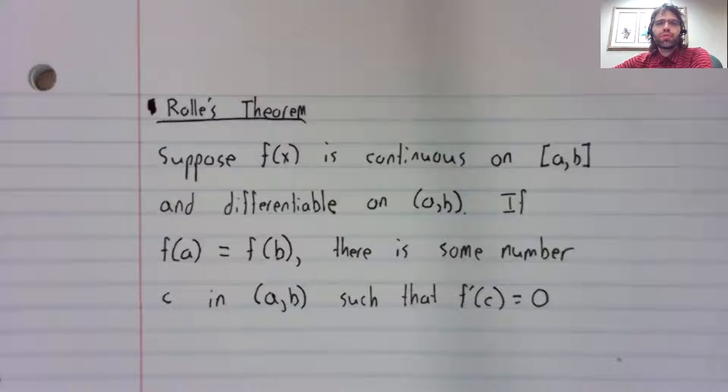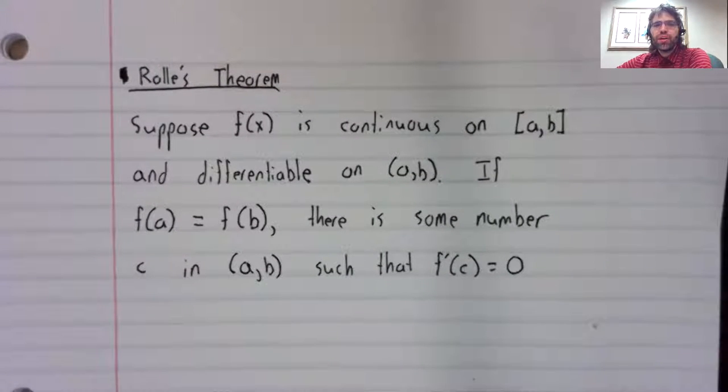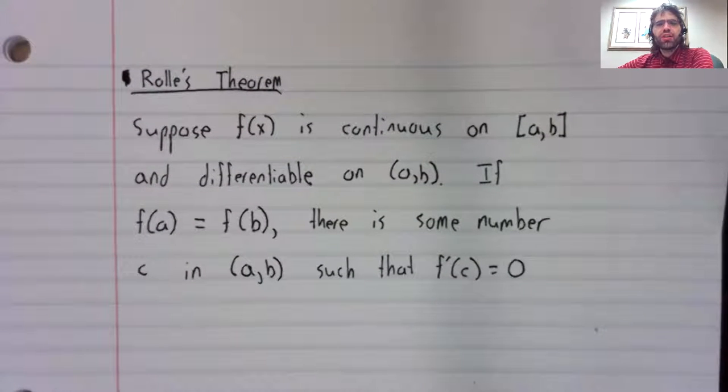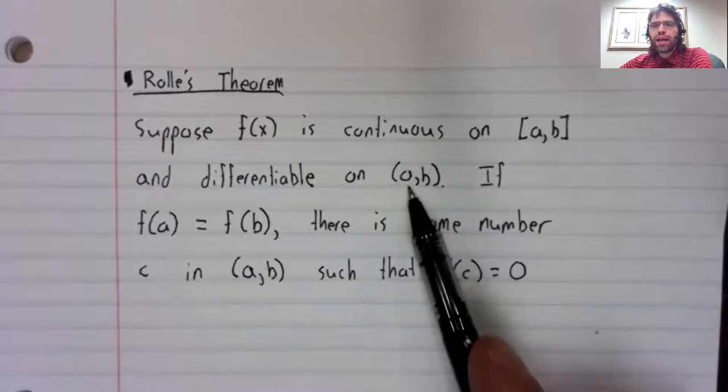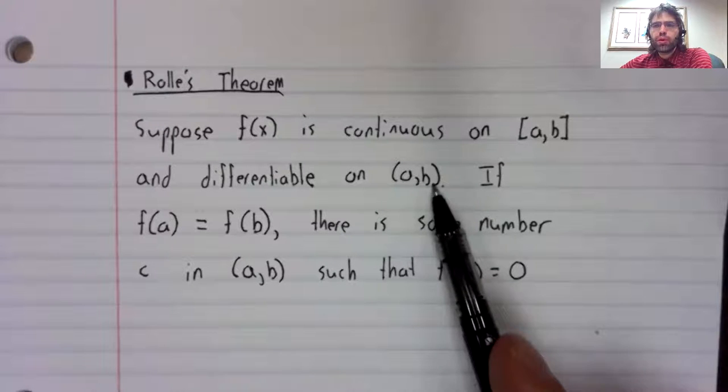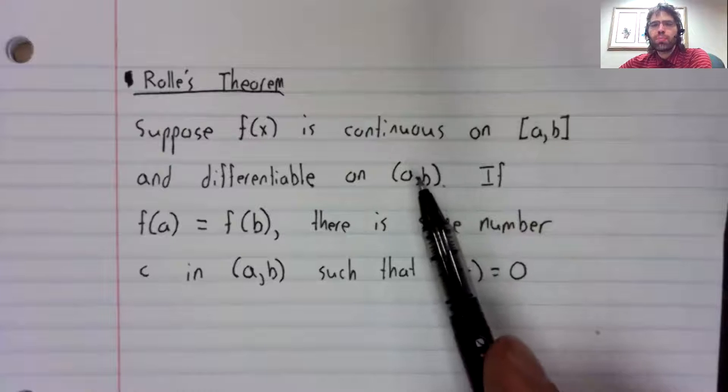Rolle's theorem probably doesn't sound like much when you state it. Suppose we have a continuous function on a closed interval. And it's differentiable everywhere on that same interval, except perhaps at the endpoints. You see this closed interval has become open.